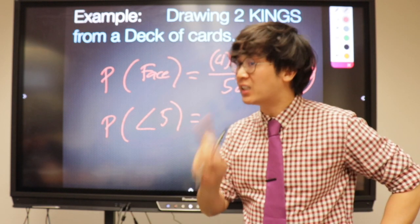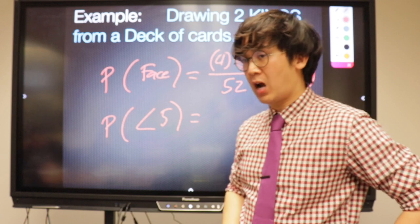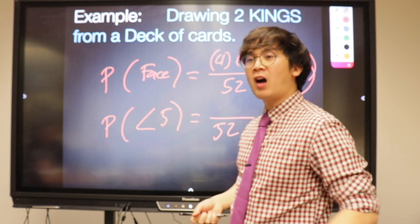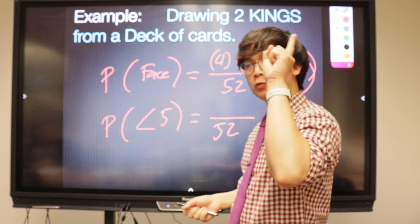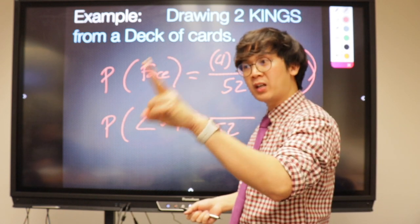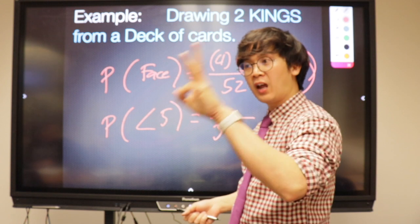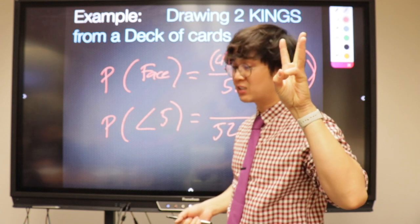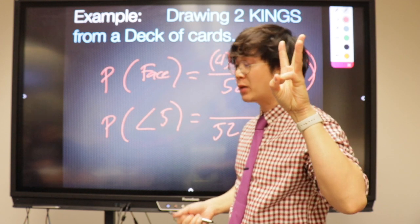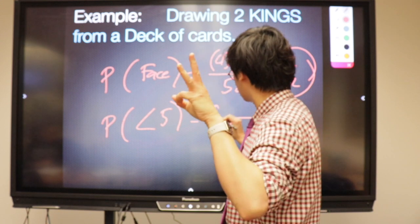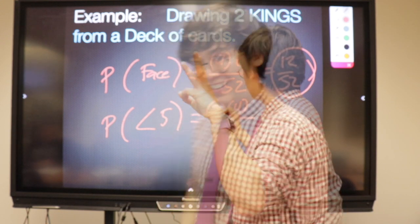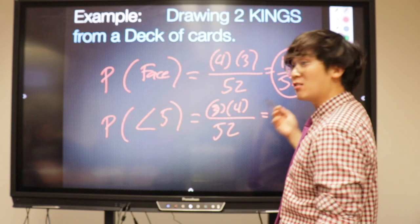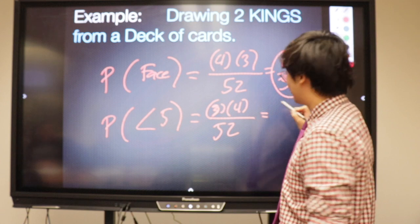Numbers less than five are two, three, and four — that's three numbers. There are four suits, and three times four is 12. So the probability is 12 out of 52.